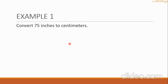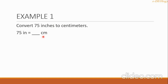Let's see some examples. Example 1: Convert 75 inches to centimeters. In symbol, we write 75 in equals blank centimeters. We know the conversion: 1 inch equals 2.54 centimeters.